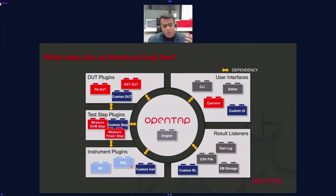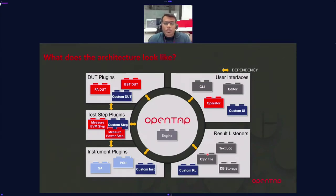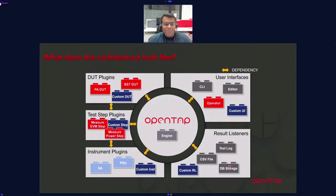We also have the instrument plugin — you can create your own instruments, not tied to OpenTap's core, by leveraging the instrument interface or base class. For result listeners, OpenTap has an open-source CSV result listener, a test log result listener, and a PostgreSQL DB storage option. You can also create your own result listeners — MongoDB, a time series database — whatever fits your project.